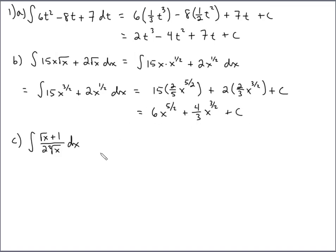For part C, we're going to want to first write everything with fractional exponents again, and whenever you have a binomial or a trinomial or something like that divided by a monomial, the best thing to do is just to split it up. So I'm going to split this up as root X divided by that plus one divided by that.